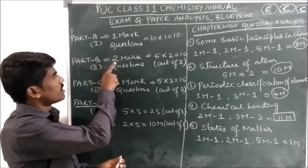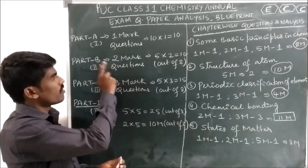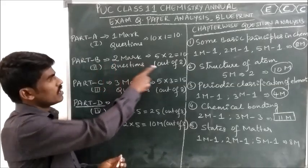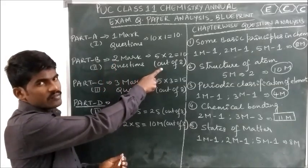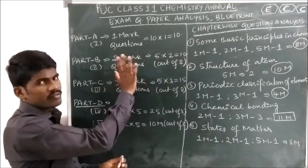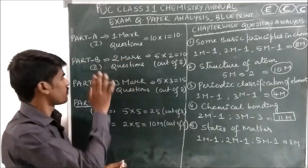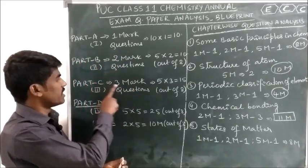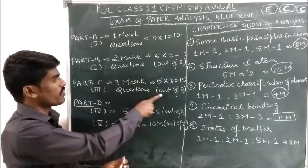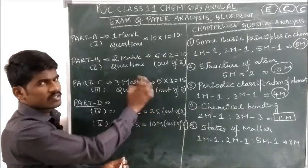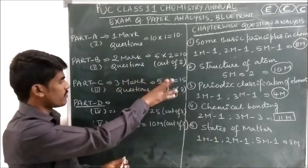Part B consists of 2-mark questions. They will give you 8 questions; out of 8, you need to attempt 5. Choice is there. Part C is 3-mark questions. Out of 8, you need to attempt 5. So 5 × 3 = 15.